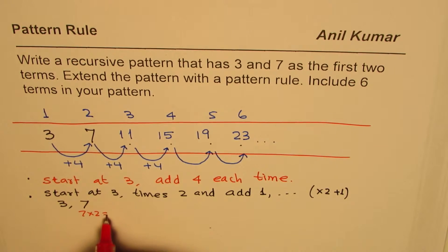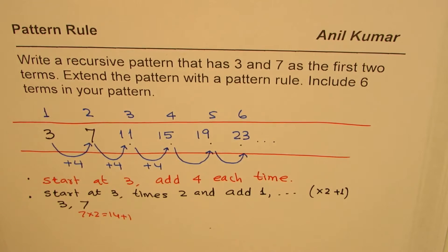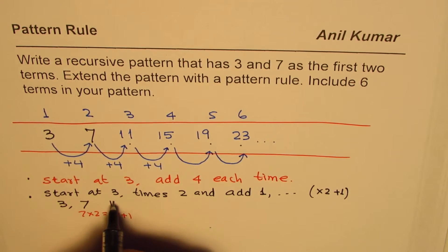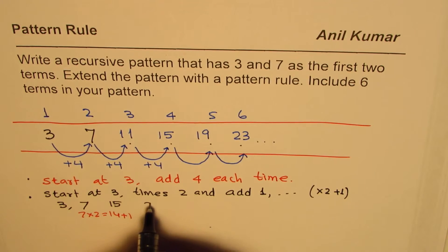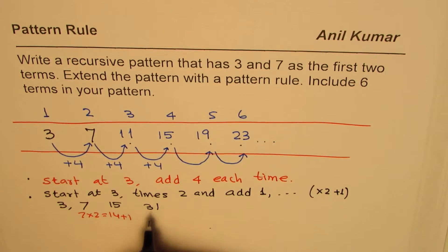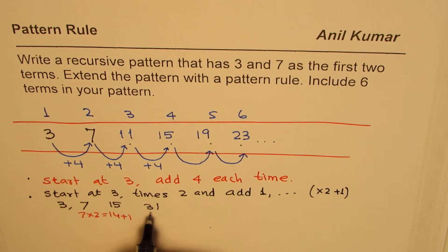Times two: what is seven times two? It is 14 plus one gives you 15, so we get 15 here. The next number will be 15 times two, that is 30, double this number and add one, so that would be 31. Do you get it? Times two: you can use the calculator. 62 plus one is 63.